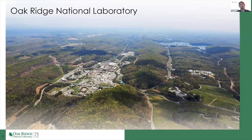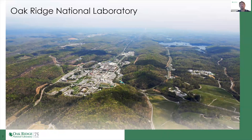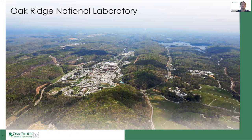Oak Ridge National Laboratory is a Department of Energy federally funded research and development center located in the eastern half of Tennessee. The picture here really encompasses the mission of the laboratory. The lower portion represents our material science and discovery division. The upper left is our Spallation Neutron Source, one of the brightest sources of neutrons in the world, important for characterization of new materials. On the right is the High Flux Isotope Reactor, one of the world's only sources of rare medical isotopes. In the center is the Oak Ridge Leadership Computing Facility — our user facility for standing up the nation's fastest supercomputers.